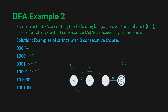Testing '101000': from A, 1 keeps us in A, then 0 to B, then 1 back to A, then 0 to B, 0 to C, 0 to D — final state, accepted. Testing '100100': from A, 1 stays in A, 0 to B, 0 to C, then 1 back to A, then 0-0-0 to D — D is a final state, so this string is also accepted.